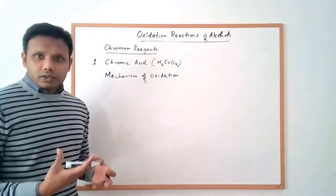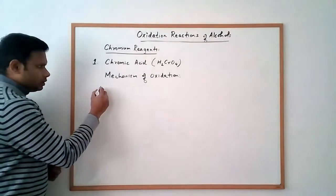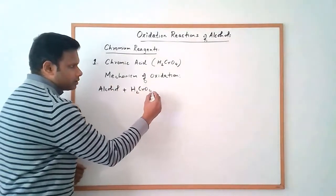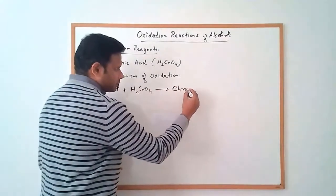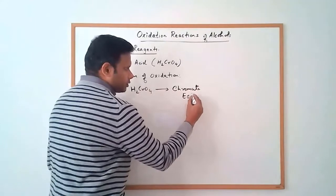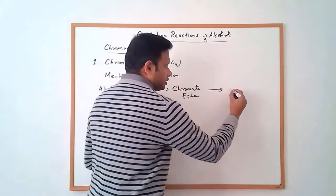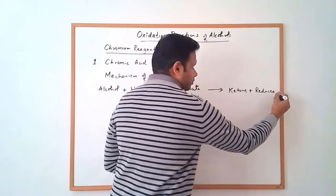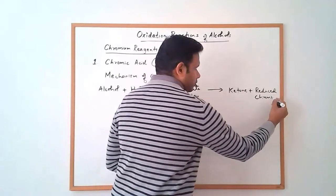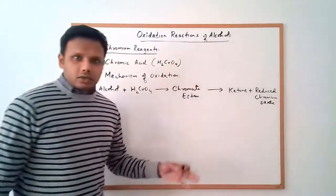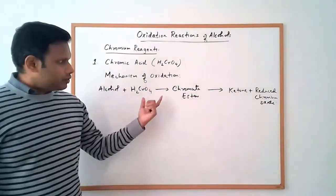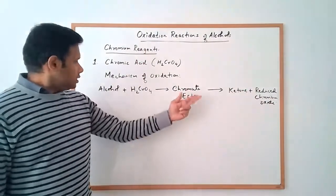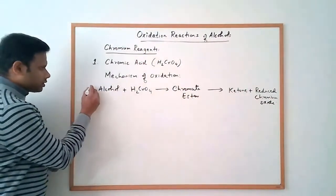The first step is the formation of what's called a chromate ester. The alcohol reacts with chromic acid to give a chromate ester, which then gives you the ketone plus the reduced chromium oxide. So you first make the chromate ester intermediate, and that undergoes reduction to the ketone when starting from a secondary alcohol.